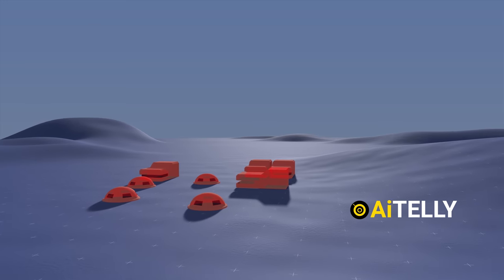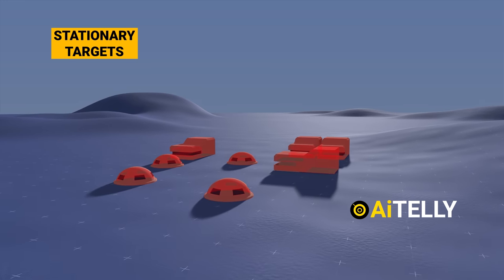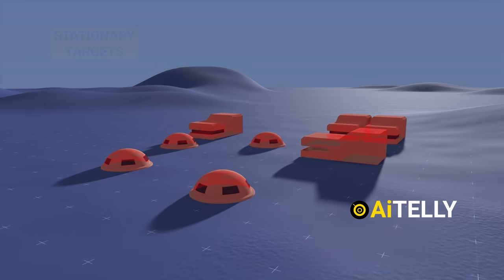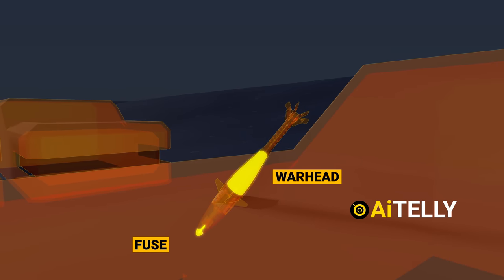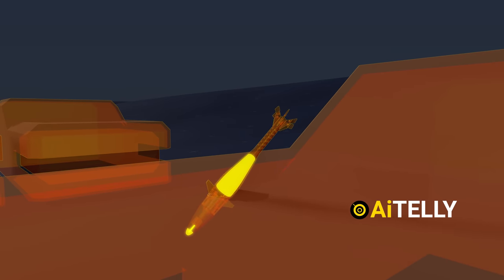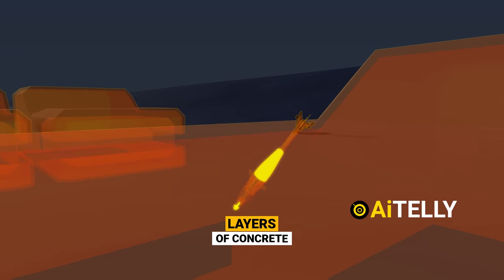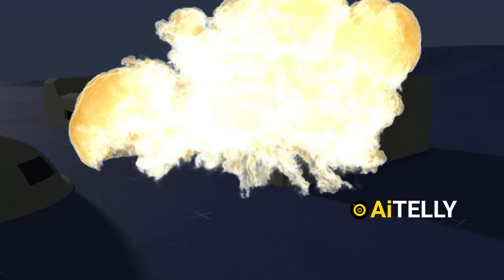This weapon is particularly effective against stationary targets like small bunkers. As demonstrated in the animations, the fuse at the front of the Iron Sting activates and triggers the warhead. When set in delayed mode, the Iron Sting penetrates layers of concrete before detonating inside the reinforced bunker.